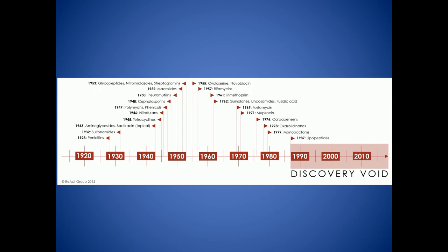We don't have any new families of antibiotics since the late 1980s. For gram-negative patients we are now using drugs like colistin, which is very commonly used and is about 50-60 years old — it was discovered at the end of the 1950s — and is now one of the main drugs used in intensive care for difficult infections.